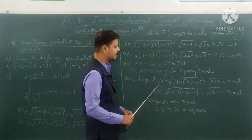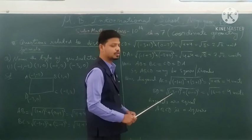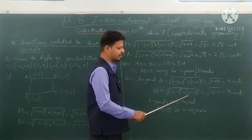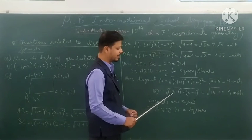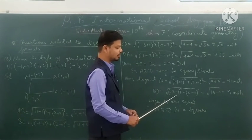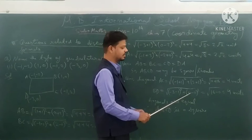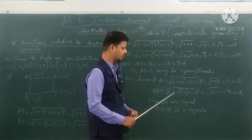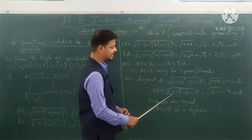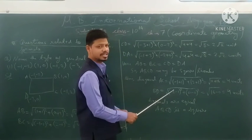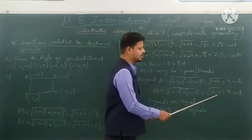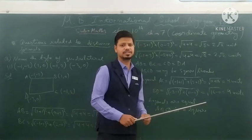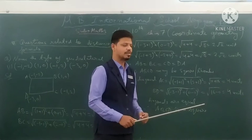Similarly, we calculate diagonal BD using B (1, 0) and D (−3, 0): √[(−3−1)² + (0−0)²] = √[(−4)² + 0] = √16 = 4 units.